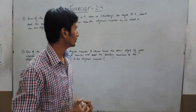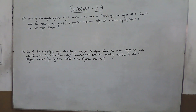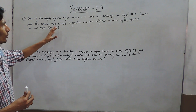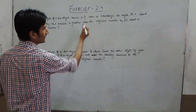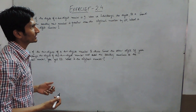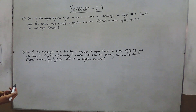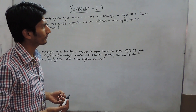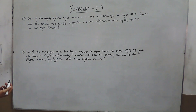Hello everyone. In this video we are going to solve question number 3 and question number 4. In question number 3, it is given that the sum of the digits of a 2-digit number is 9. When we interchange the digits, the resulting new number is greater than the original number by 27. We have to find the 2-digit number.